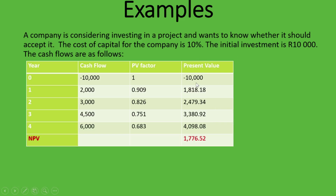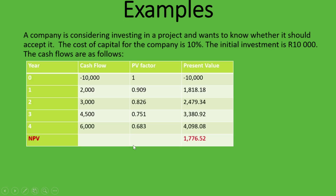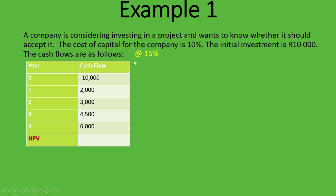Summing up all the present values from year zero to year four gives us a net present value of 1,776 rand 52 cents. The NPV is positive, which means the IRR is higher than the required rate of return of 10%. Therefore, we need to guess a higher rate than 10% and recalculate. We want the closest positive NPV to zero and the closest negative NPV to zero. Let's try recalculating with 15%.